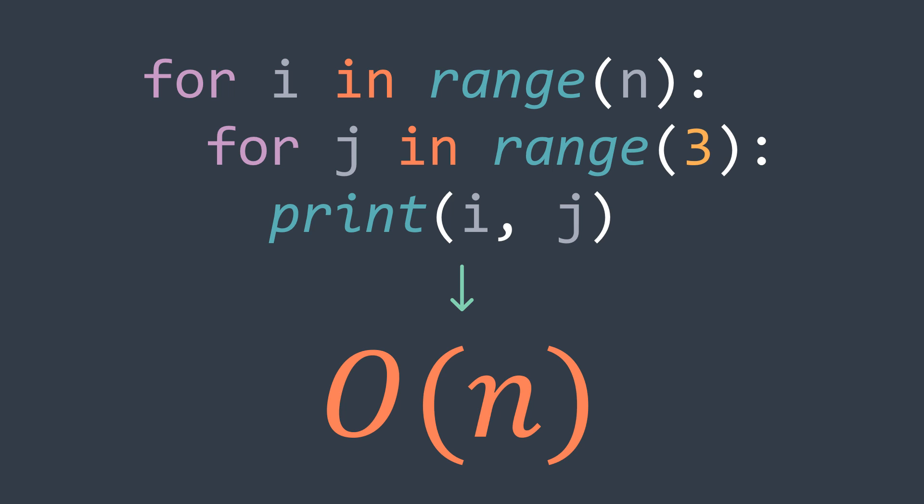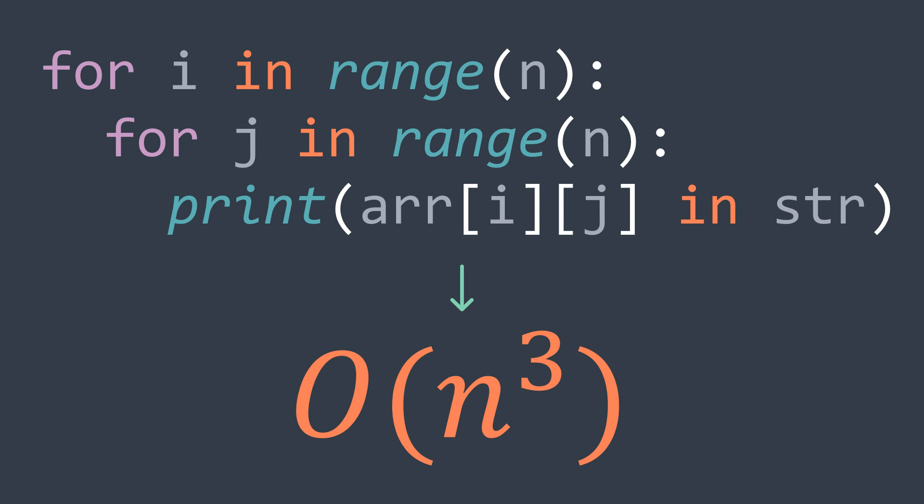We can also mention the case where we have an O(n) instruction inside the inner loop, like switching a character in a string. We get n times n times n, where n is the length of the string, which is O(n³) — a cubic time complexity.